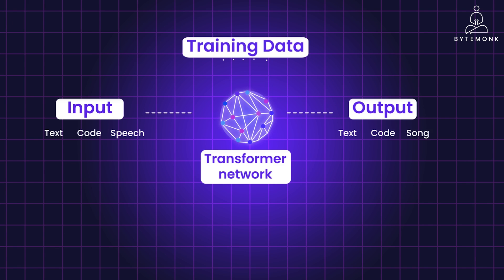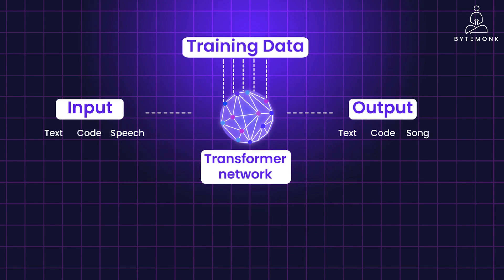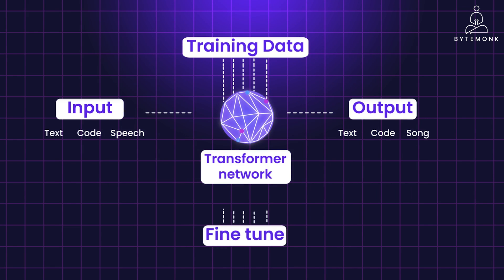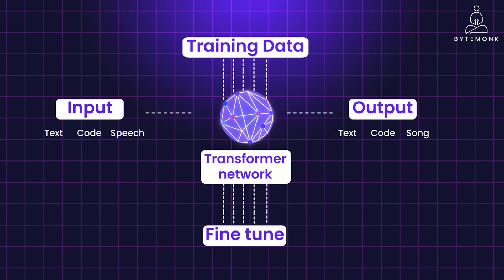Training data consists of large datasets used to train the model. LLMs are often fine-tuned on specific tasks or domains to improve their performance in those areas. This is a simplified overview, and the specific architecture can vary depending on the LLM, but hopefully this gives you a basic understanding of how these fascinating language models work.